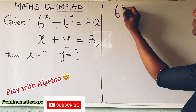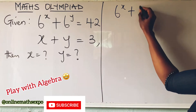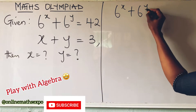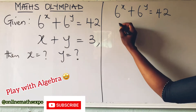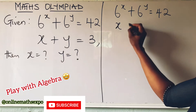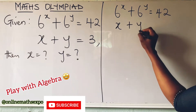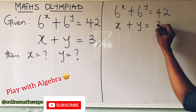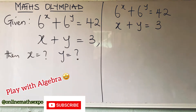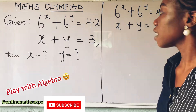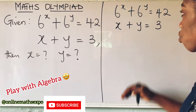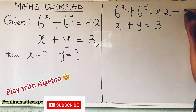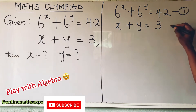We have: 6 to the power of x plus 6 to the power of y is equal to 42 — this is equation 1. And x plus y is equal to 3 — this is equation 2.